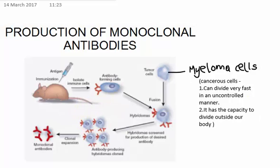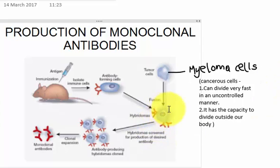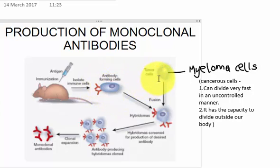So what is hybridoma technology? In short, hybridoma technology is a technique of forming hybrid cell lines called hybridomas, by fusing specific antibody-producing cells with the myeloma cells — that is, the B cell cancer cells — and the cells are selected for their ability to grow in tissue culture.